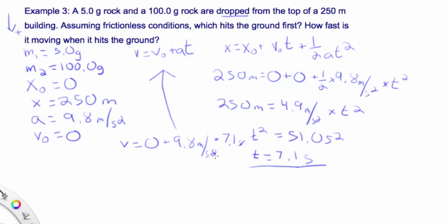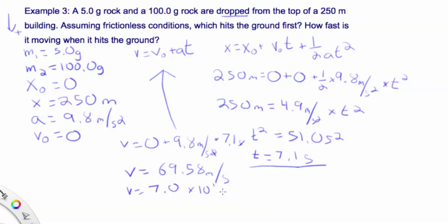Let's talk about significant figures. We need two significant figures because of 250 and 9.8. The masses don't matter since we don't use them. To round 69.58 to two significant figures, we get 7.0 times 10 to the first meters per second.